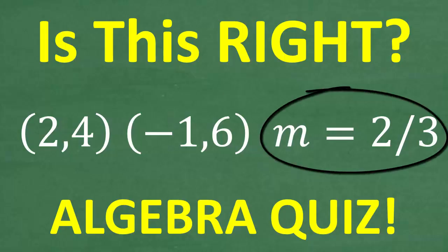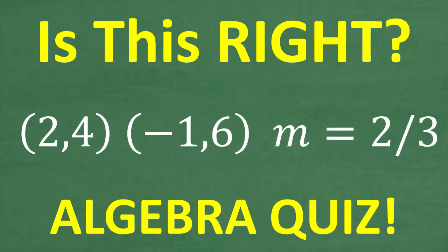Let's suppose somebody is taking a little quiz on finding the slope of a line, and they say, well, I calculated the slope here as being 2/3. So is this correct? Well, it could be correct, but it could be wrong — we just don't know. What I'm counting on you out there in YouTube land is to go ahead and calculate the slope and check the answer and just tell me: is this right or wrong?